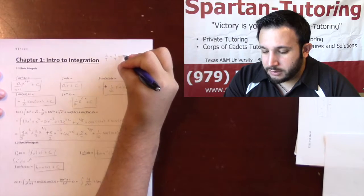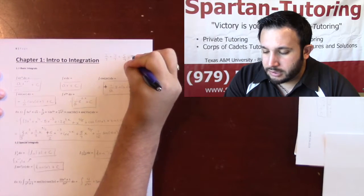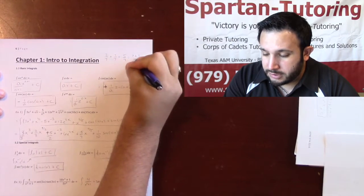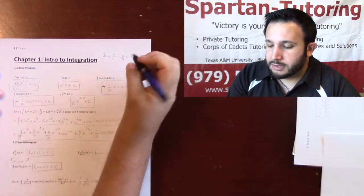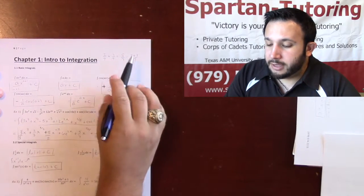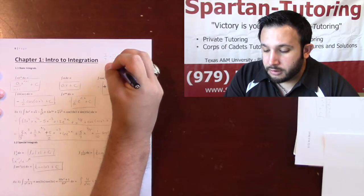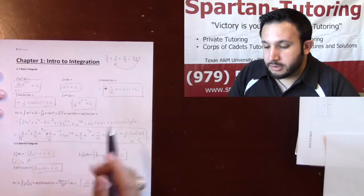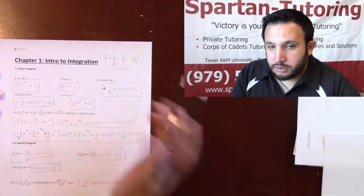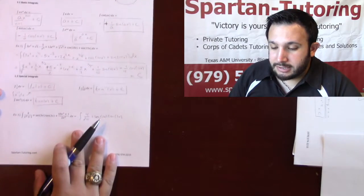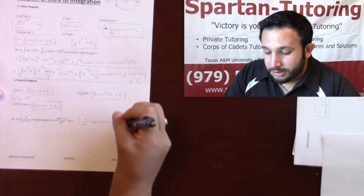Well, 5 sevens, right? And how do we do that? Well, that's because we did 2 plus 3 over 7. And the whole point of this is that whenever you have things added or subtracted on top divided by one common denominator, you can split it. You can split it into two separate fractions. And that's exactly what I'm going to do here.